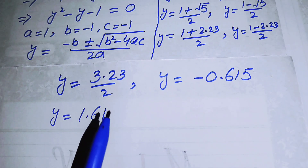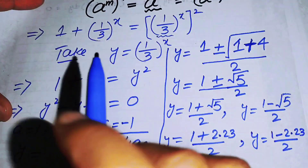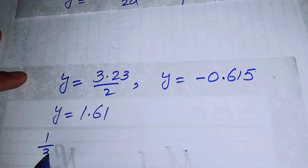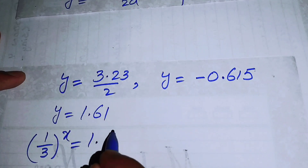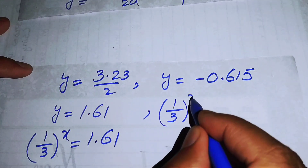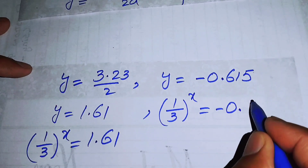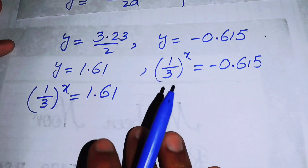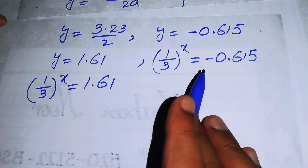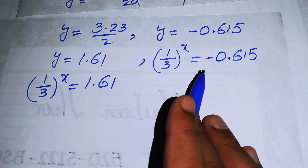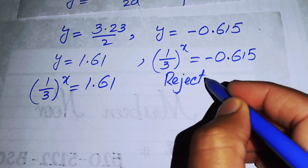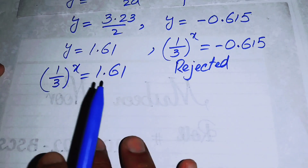Recalling that y = 1/3^x, we back-substitute. For Case 1: 1/3^x = 1.61. For Case 2: 1/3^x = −0.615. Since an exponential function cannot produce a negative value, we reject Case 2 and proceed only with Case 1.